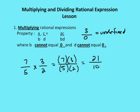Going back to our simplified form definition — the numerator and denominator should have no common factors. Looking at the factors of 21 and 10, there are no common factors, so 21 over 10 is the final simplified result.